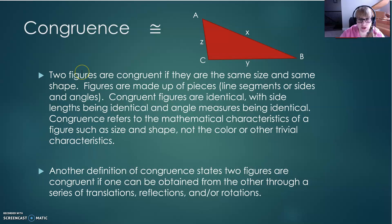Two figures are congruent if they are the same size and the same shape. Figures are made up of pieces, like line segments or sides and angles, just as this triangle is made up of angles and side lengths. So congruent figures are identical. They have side lengths that are identical, and they have angle measures that are identical. Do keep in mind that congruence refers to the mathematical characteristics of a figure, such as size and shape, and not the color or other trivial characteristics.